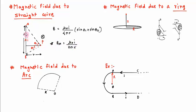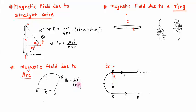Now we'll calculate the magnetic field due to an arc. For arc AB carrying current I, the magnetic field at the center O is given by B = (μ₀I / 4πr) × θ, where r is the radius and θ is the angle subtended by the arc at point O. The direction of the magnetic field is into the page.